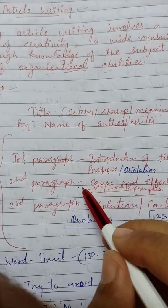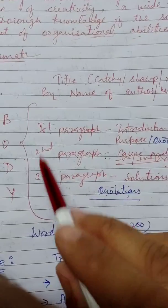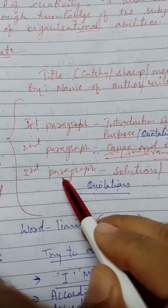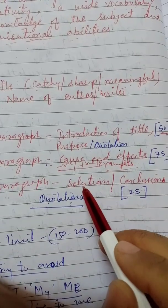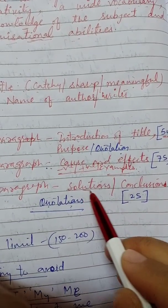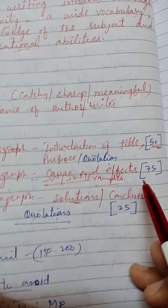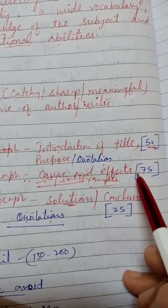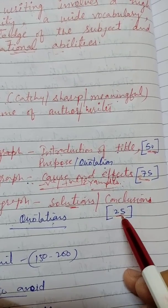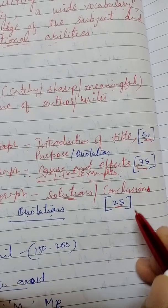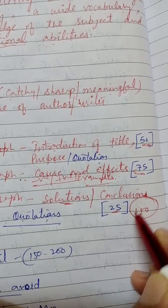The third paragraph goes for conclusion, but it also provides some solutions. Approximately 75 words for the second paragraph and approximately 25 words for the third paragraph, making it approximately 150 words total.